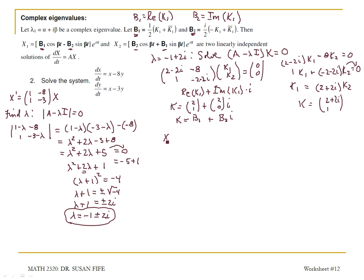And we get solutions. X1 is, and up here I'm looking at our solutions, X1 is B1 cosine beta t. So I have B1 is the vector 2, 1, cosine beta t, and beta is the imaginary part of our eigenvalue.